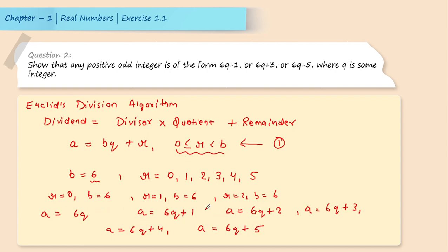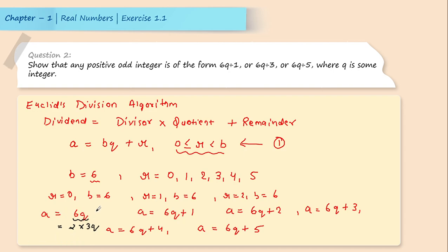Now let's examine which of these are even. a = 6q can be written as 2 × 3q, so it is even. Similarly, 6q + 2 = 2(3q + 1), which is also even. And 6q + 4 = 2(3q + 2), which is also even. So 6q, 6q+2, and 6q+4 are all even — but we want odd integers, so these are not possible.